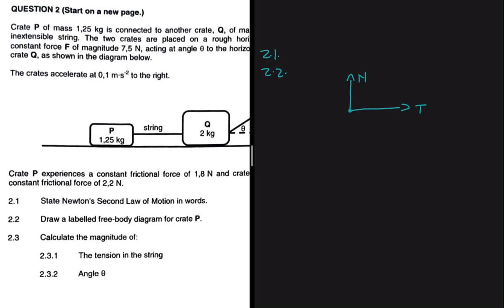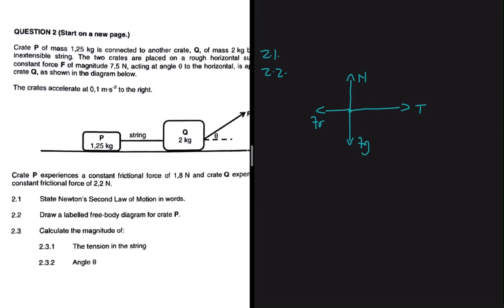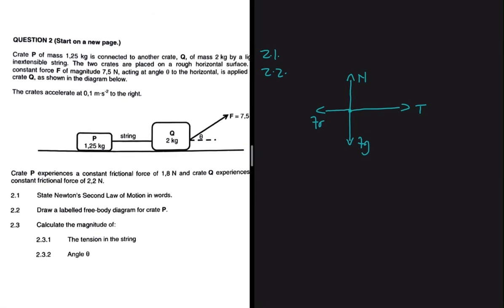We're also told that there is frictional force, so let's have a force opposing the motion. Let's have Fr there. Why is the vector for the frictional force shorter than the vector for the tension? It is shorter because the crate is accelerating to the right.